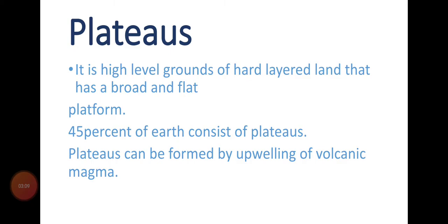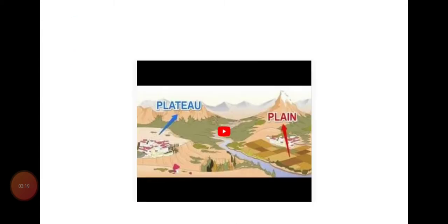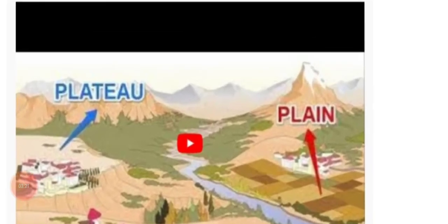The Balochistan Plateau and the Potwar Plateau in Punjab are the best examples of this landform in Pakistan. Do you know Balochistan is not very fertile land? That is because most of Balochistan is a plateau — it is rocky. Look at this picture where a plateau and a plain are shown. Can you see the crops on the plain area? On the plateau there is not much vegetation because the land is hard and not very good for cultivation.